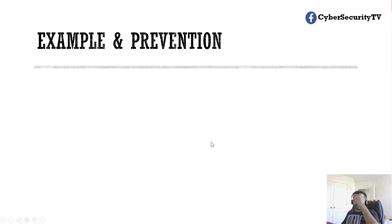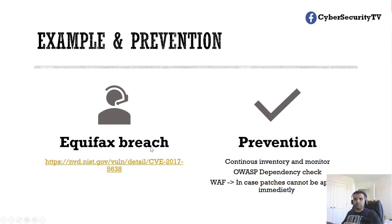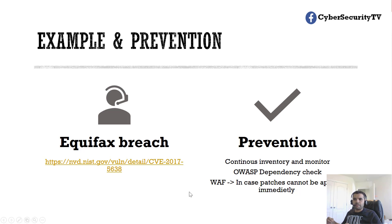A very famous example is the Equifax breach, which happened in 2017. Personal data of more than 100 million customers was compromised, including names, social security numbers, birth dates, and addresses. The breach occurred because Equifax was using Apache Struts, which had a vulnerability with a CVSS score of 10 — extremely critical.